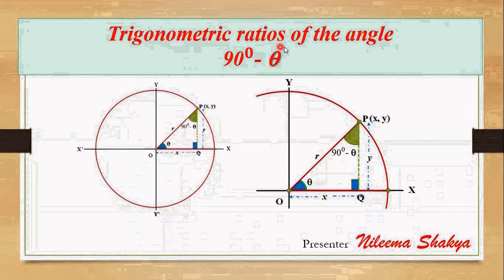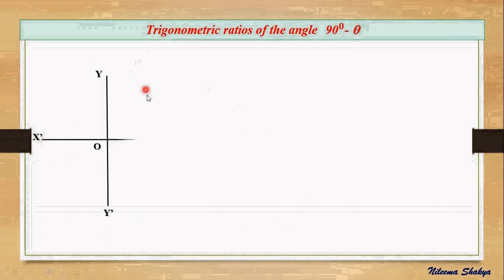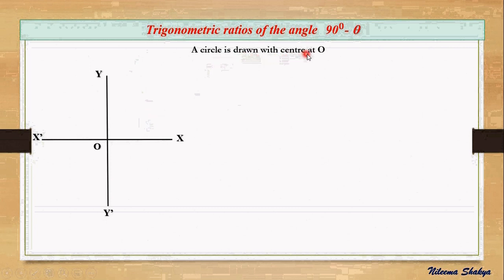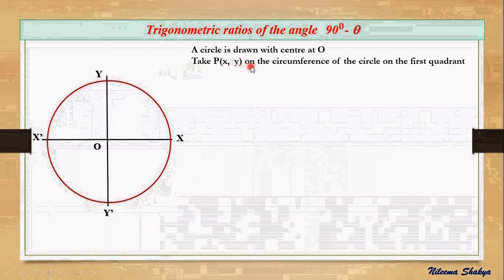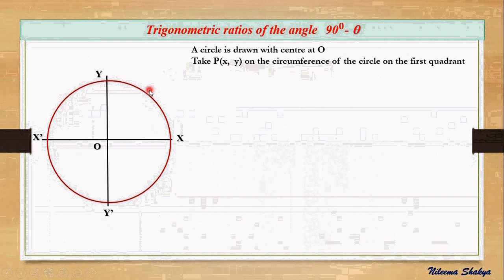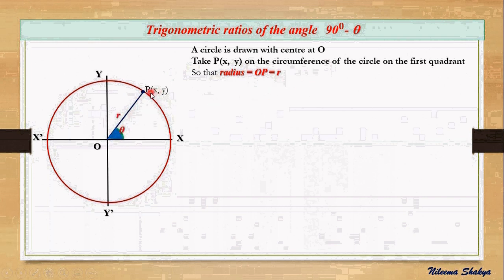Hello students, today we are going to find the trigonometric ratios of the angle 90 degrees minus theta. For this, let's take the axis of coordinates and draw a circle with the center at the origin. A point P on the circumference is taken which lies in the first quadrant, so that OP is the radius r and the angle equals theta.